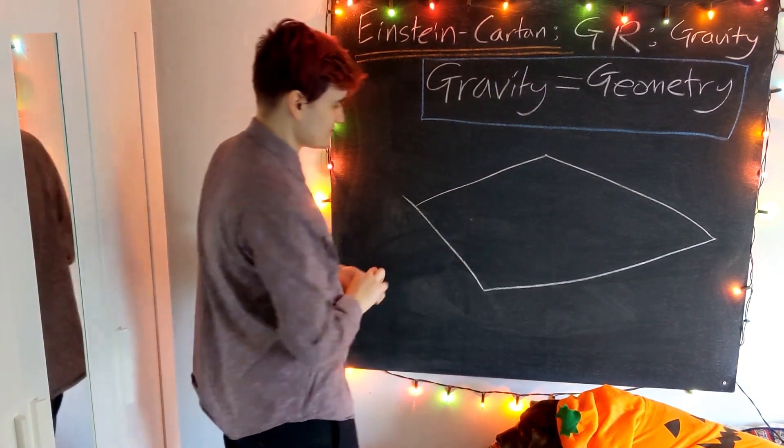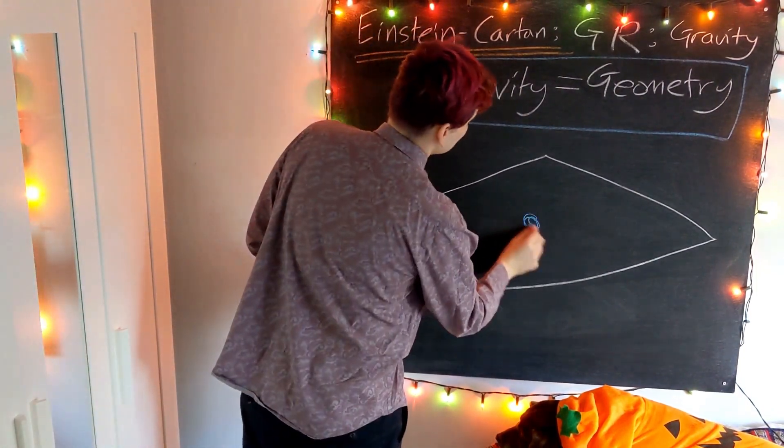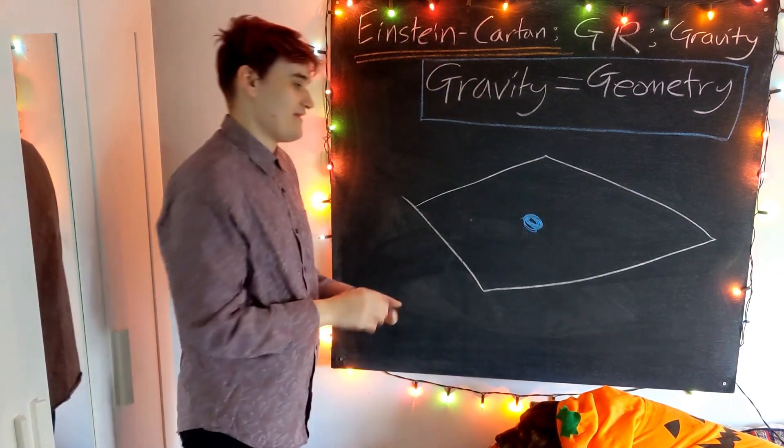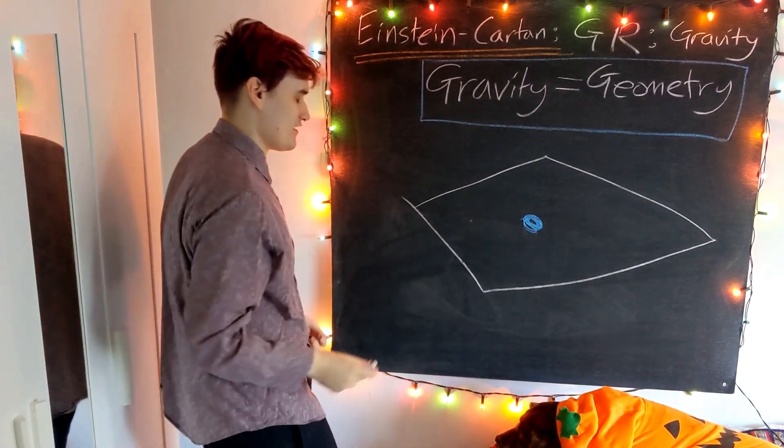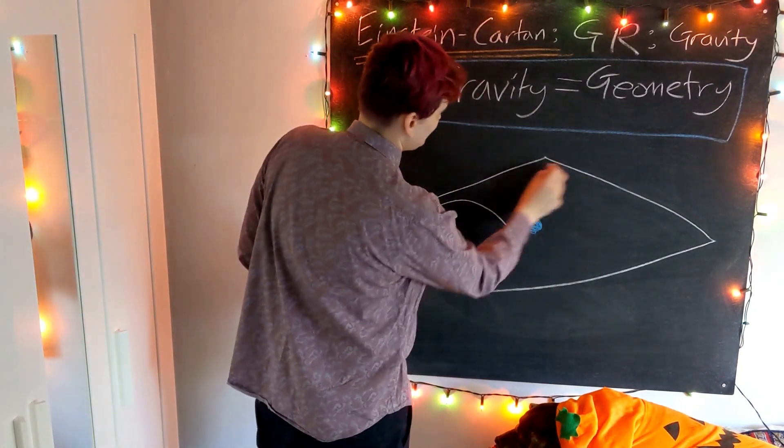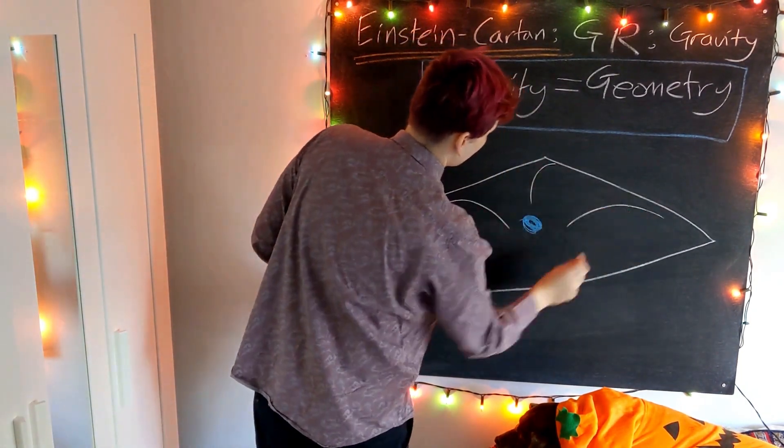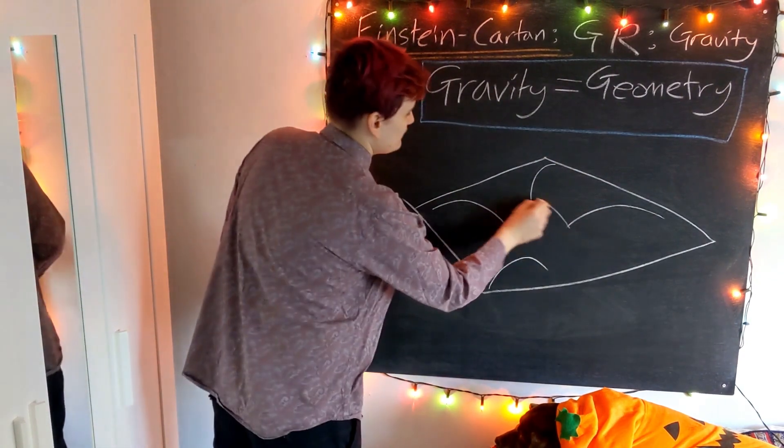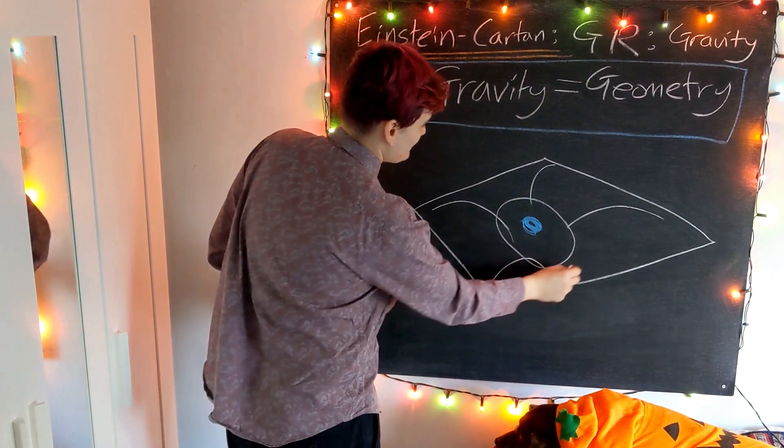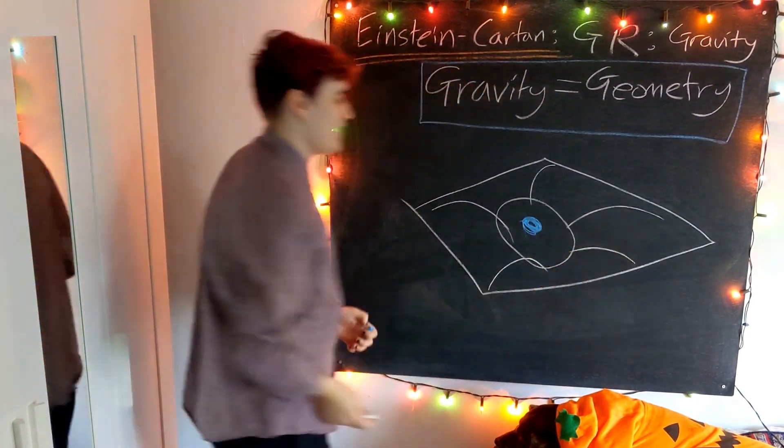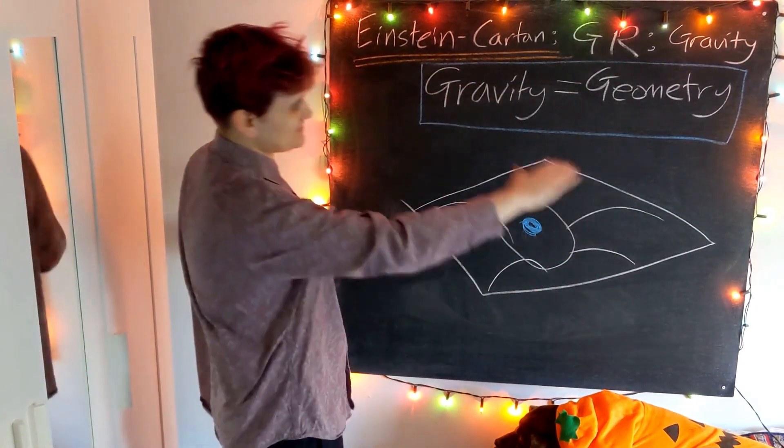If we introduce some mass into this picture, adding this mass or energy causes this spacetime to curve. You've probably seen people do this with rubber sheets and bowling balls and stuff like that.